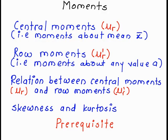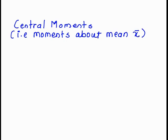In this video we study moments — central moments, that is moment about X bar. Raw moment is denoted by mu r dash, that is moment about any value a. We also study the relation between the central moment and the raw moment, and what is skewness and kurtosis. We study the prerequisites of all the above topics.